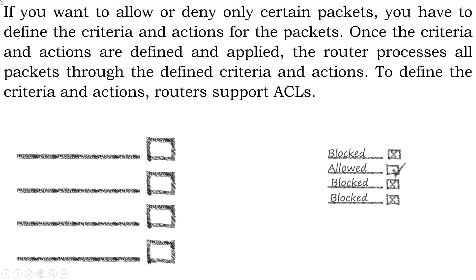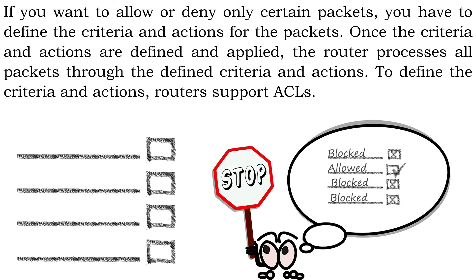If you want to allow or deny only certain packets, you have to define the criteria and actions for the packets. Once the criteria and actions are defined and applied, the router processes all packets through the defined criteria and actions. To define the criteria and actions, routers support ACLs.